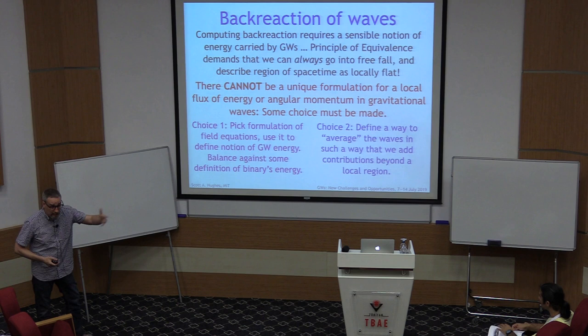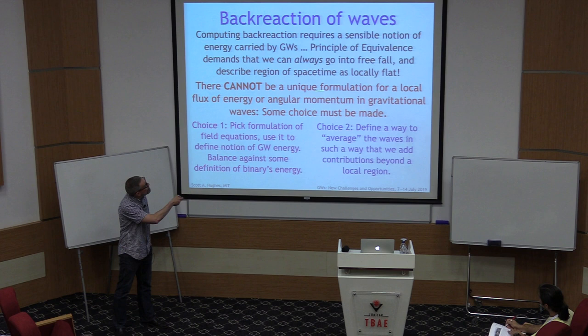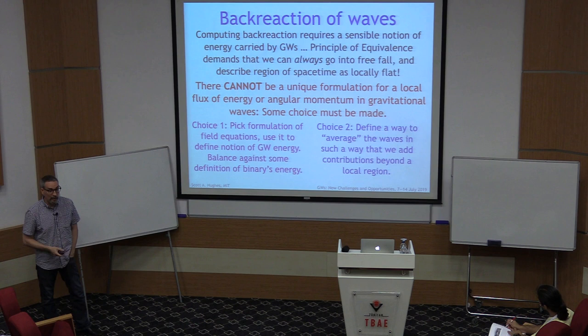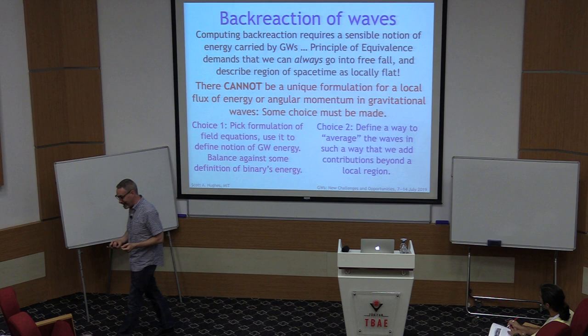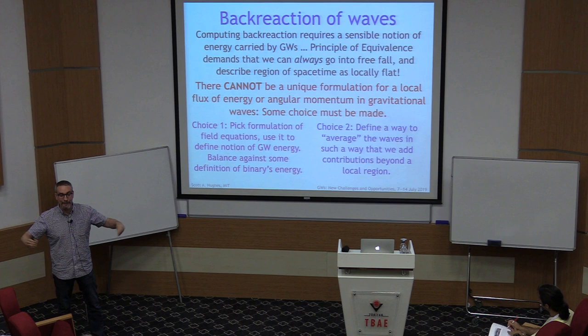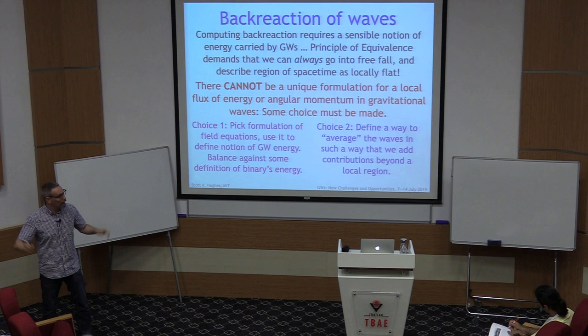I can always perform a gauge transformation such that at an exact point in space and time, space-time is flat, its time derivative is zero, and there's no energy associated with it. But that's only true at one location. This means I cannot make a unique formulation for the local flux of energy and angular momentum in gravitational waves — I have to make some choices. Sometimes you use a gauge-dependent statement for part of your calculation and get a gauge-invariant result at the end.